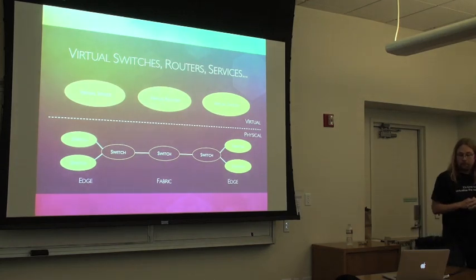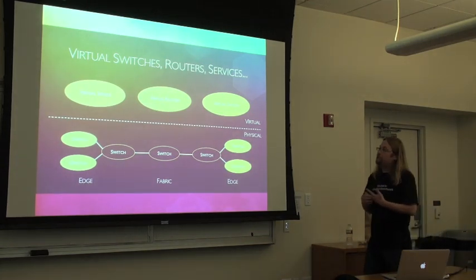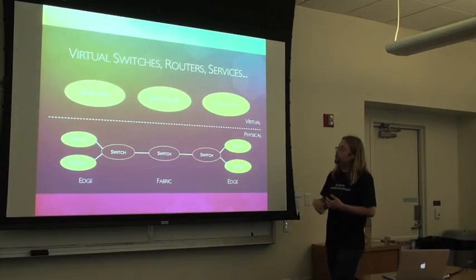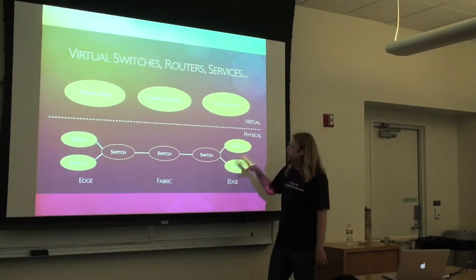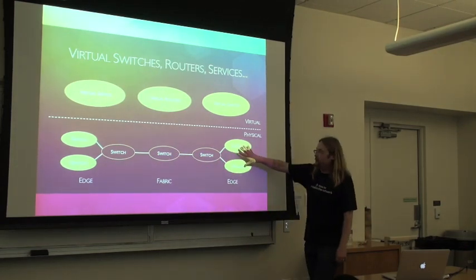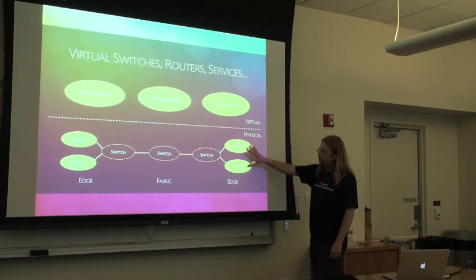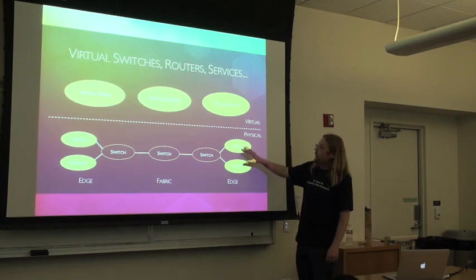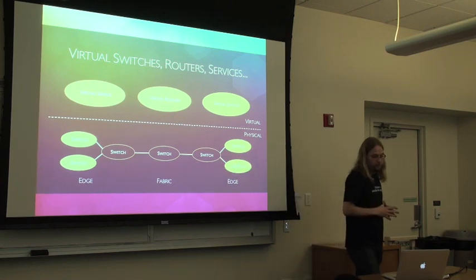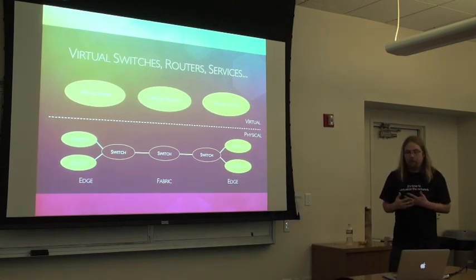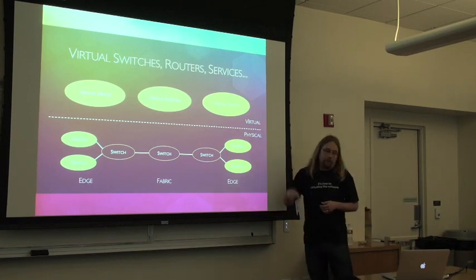And we don't have to stop at switches and routers. What we can do is have virtual services provided for the users as well. And again, we don't have to touch the middle parts of the network. We can implement everything at the hypervisors, or whatever existing service you might be using at the edge. And the middle part of the network remains still simple, even though the users are provided with all the services they used to have in the physical networks.